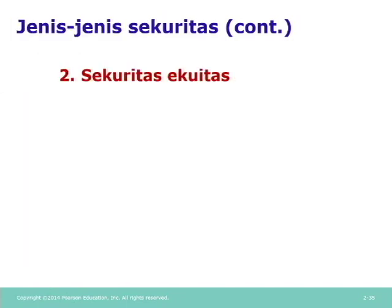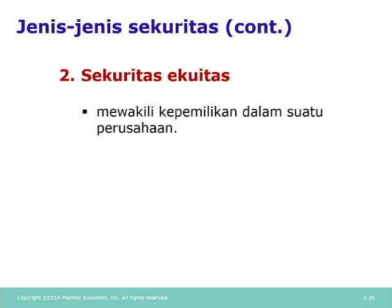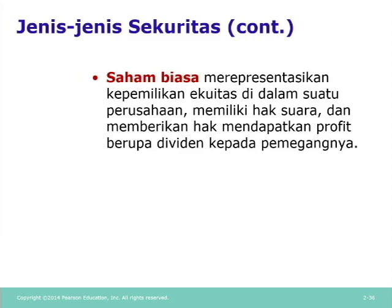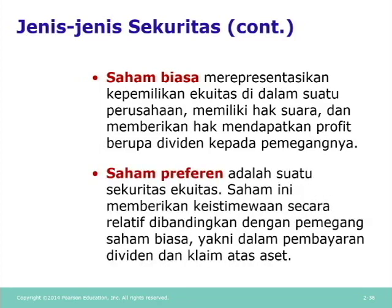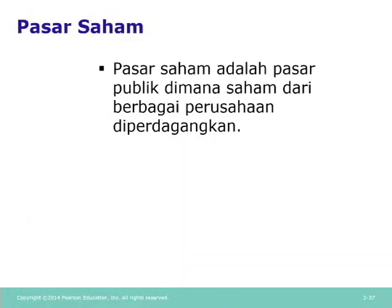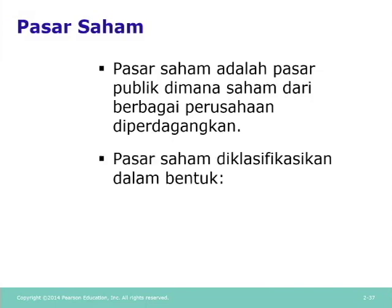Yang kedua adalah sekuritas ekuitas. Sekuritas ekuitas mewakili kepemilikan dalam suatu perusahaan; ada dua tipe utama yaitu saham biasa dan saham preferen. Saham biasa merepresentasikan kepemilikan ekuitas di dalam suatu perusahaan, memiliki hak suara, dan memberikan hak mendapatkan profit berupa dividen. Sedangkan saham preferen adalah sekuritas ekuitas yang memberikan keistimewaan secara relatif dibandingkan pemegang saham biasa, yakni dalam pembayaran dividen dan klaim atas aset.